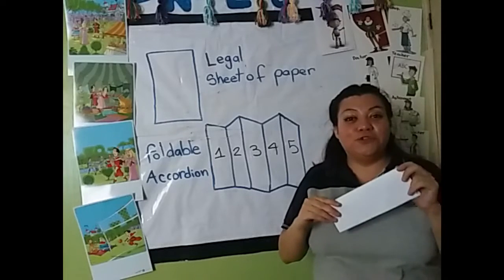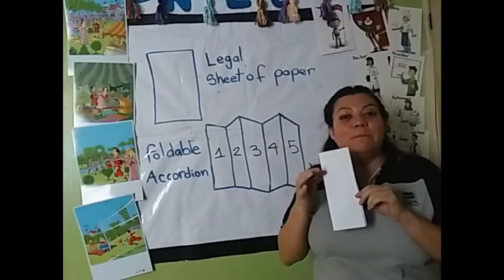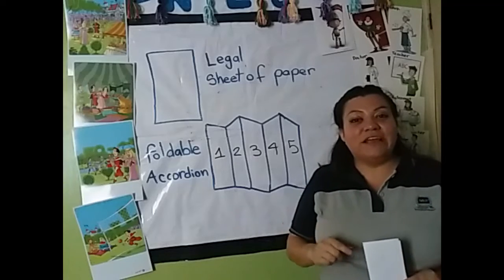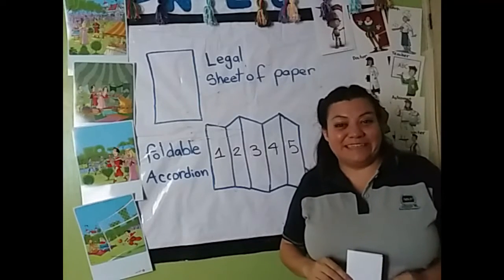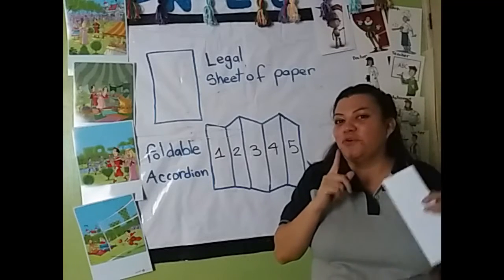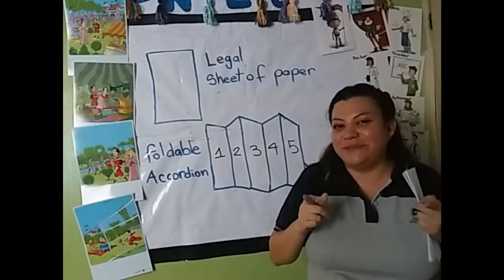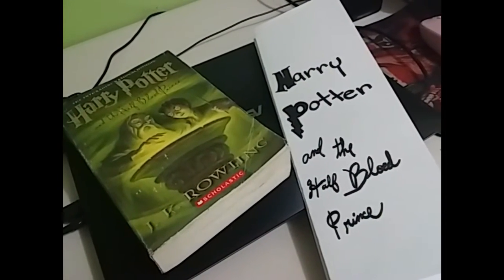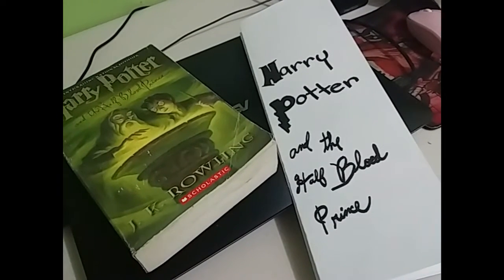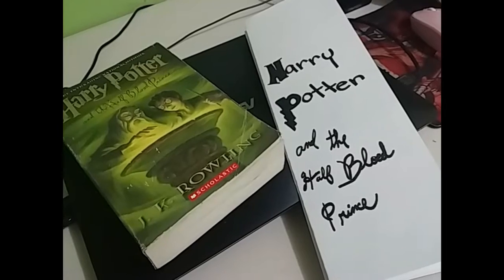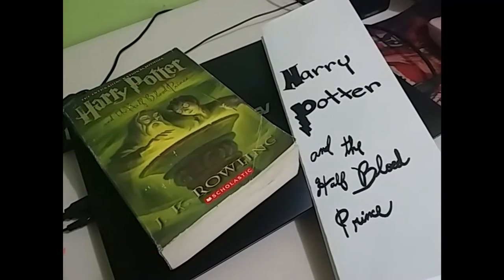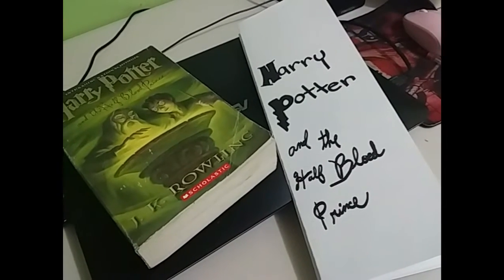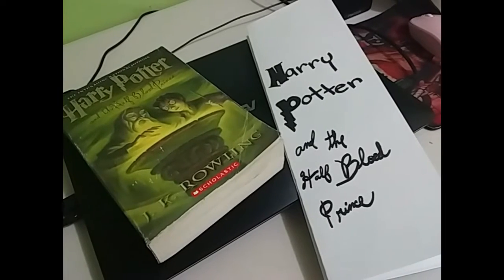We are going to write the parts of the story here: the setting, the beginning, the middle, and the end — for the midterm test. Here is my foldable of Harry Potter and the Half-Blood Prince. I have read this book many, many times, so I made my Harry Potter foldable accordion.